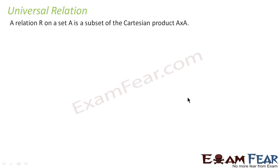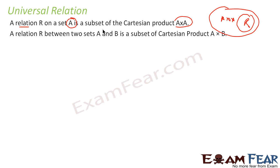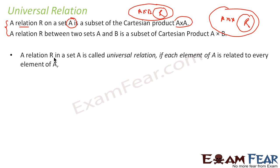Let's repeat the definition: a relation is defined on set A by taking the Cartesian product A cross A, and then taking a subset based on some pattern. For two sets A and B, you take A cross B and derive a relation based on a pattern.